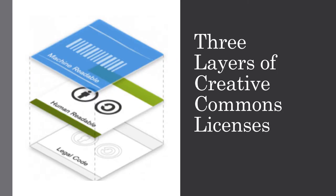When you cut an onion in half, you can see that it has many layers. Likewise, Creative Commons' license structure offers many layers to protect copyright while promoting sharing. Let's start at the heart of the onion, or the three core layers included in any Creative Commons license.